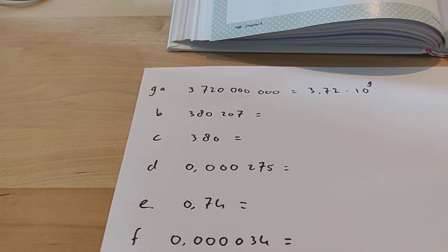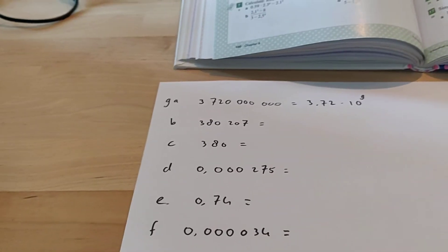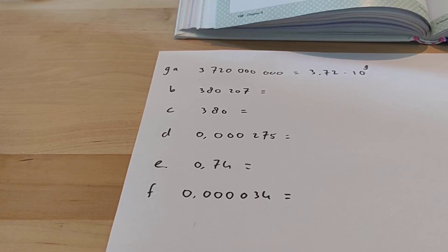If you have a very small number, like with D, E and F, well E is not that small, but you get a negative power there.